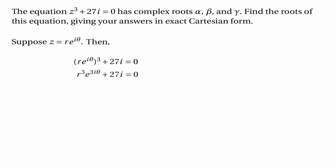First of all, we'll say that r cubed times e to the power of 3i theta plus 27i equals zero, and then that r cubed e to the 3i theta is equal to minus 27i. Now minus 27i is simply the complex number with modulus 27 and argument 3π over 2, so we can write that as 27 times e to the power of i times 3π over 2.